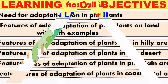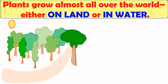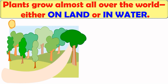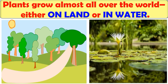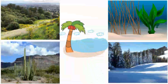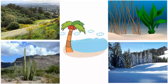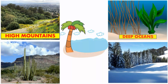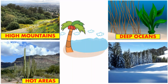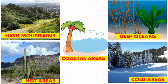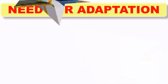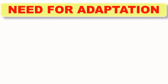Plants grow almost all over the world, either on land or in water. You can find plants on high mountains, deep oceans, hot places, cold places, and coastal areas. First, we will see the need for adaptation.